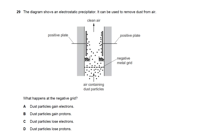Question 29: in an electrostatic precipitator, dust particles pass a negative metal grid and become negatively charged (they gain electrons). They are then attracted to the positive plates. So at the negative grid, dust particles gain electrons — that is the correct description.